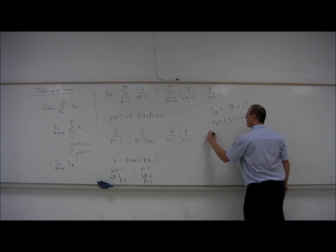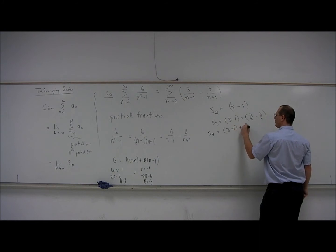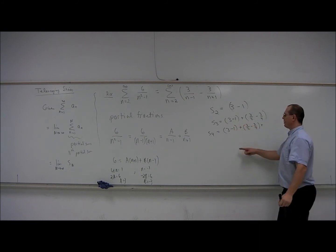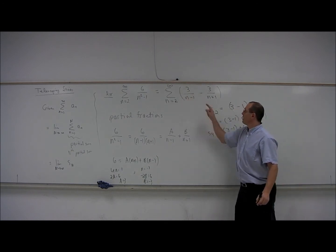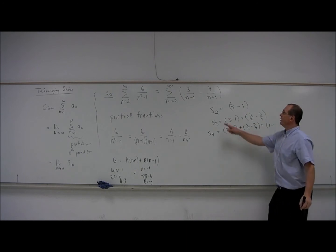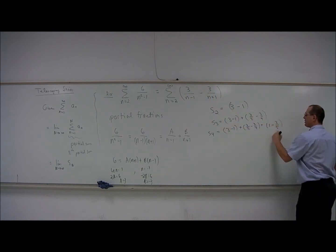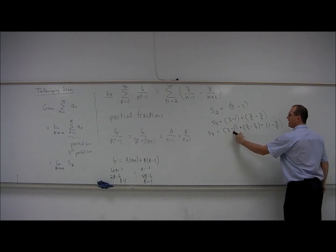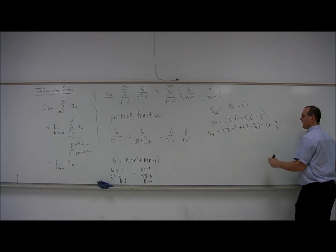If you try S4, you'll get 3 minus 1 plus 3 halves minus 3 quarters plus plug in n equals 4, and you get 3 over 3, which is 1, and you get 3 over 5. And now something does happen. Here we have a negative 1, and here we have a negative 1, and here we have a positive 1. These are going to cancel.